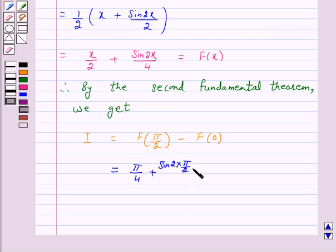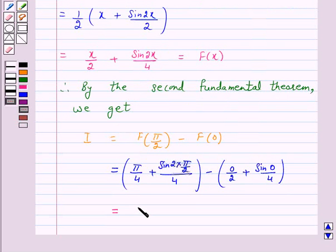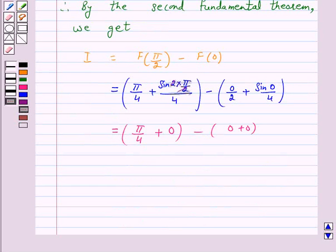Minus 0/2 + sin0/4. Now, this is again equal to π/4 + sin(π)/4.